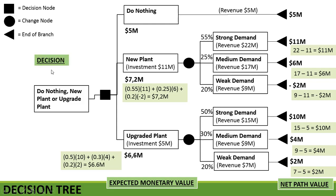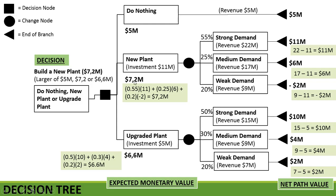Now to make our final decision. We always choose the option with the largest expected monetary value. Doing nothing gives 5 million, building a new plant gives 7.2 million, and upgrading the plant gives 6.6 million. So we will opt for building a new plant with the expected monetary value of 7.2 million dollars.